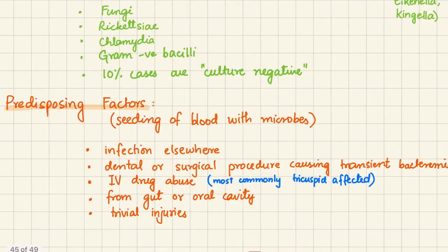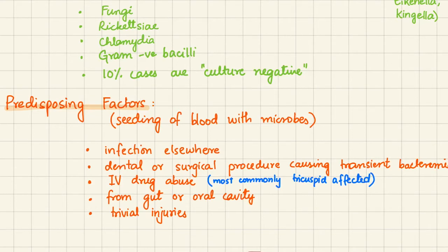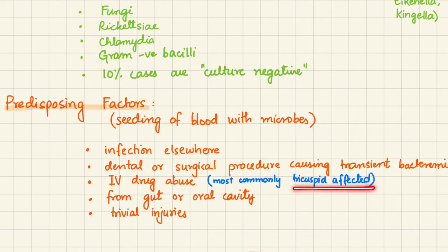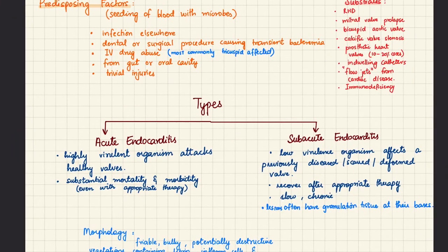Many predisposing factors pave the way for infective endocarditis by seeding the blood with microbes. These include infection elsewhere in the body, dental or surgical procedures causing transient bacteremia, IV drug abuse where dirty needles introduce bacteria into the blood — in this case the tricuspid valve is most commonly affected since venous blood first enters the right atria. Bacteria from the gut or oral cavity and trivial injuries are also predisposing factors.